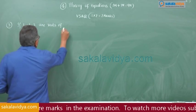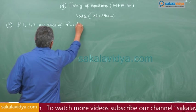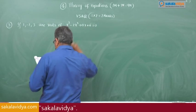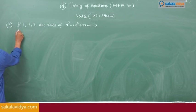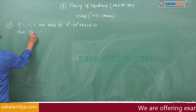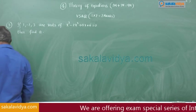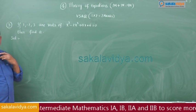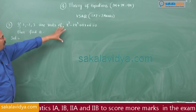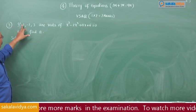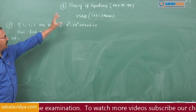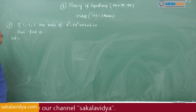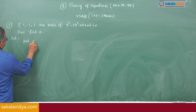Third problem: If 1, minus 2, 3 are roots of x cube minus 2x square plus ax plus 6 equals 0, then find a. Since the roots of this cubic equation are 1, minus 2, and 3, all roots must satisfy the equation. That means putting x equal to 1 and equating to 0 will give the value of a. So put x equal to 1; it must satisfy the equation.